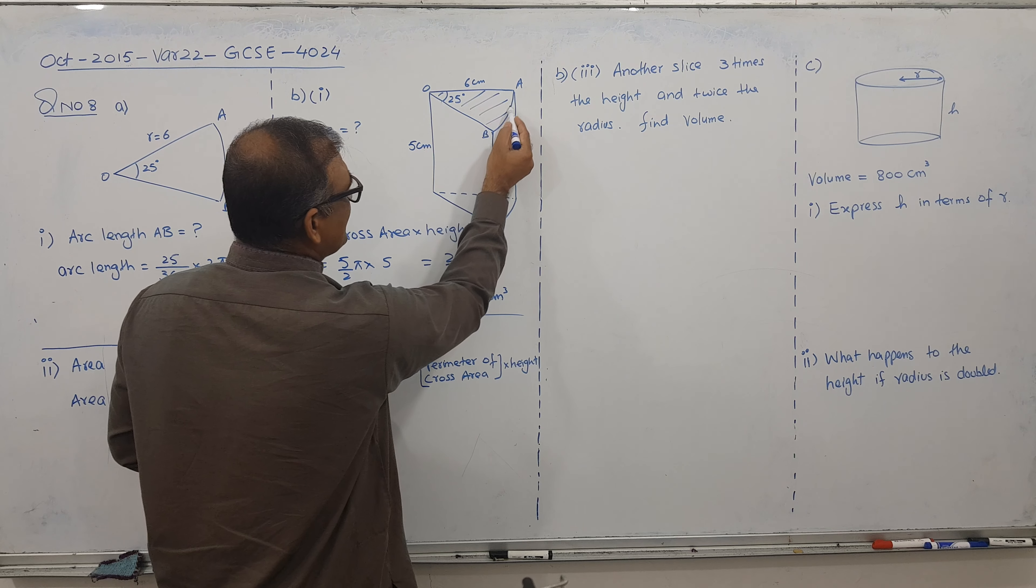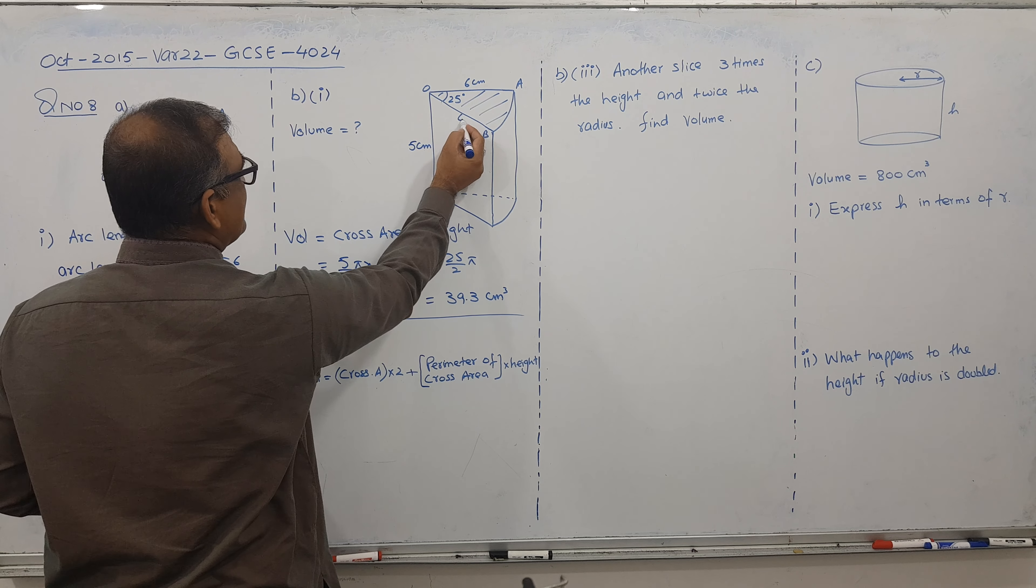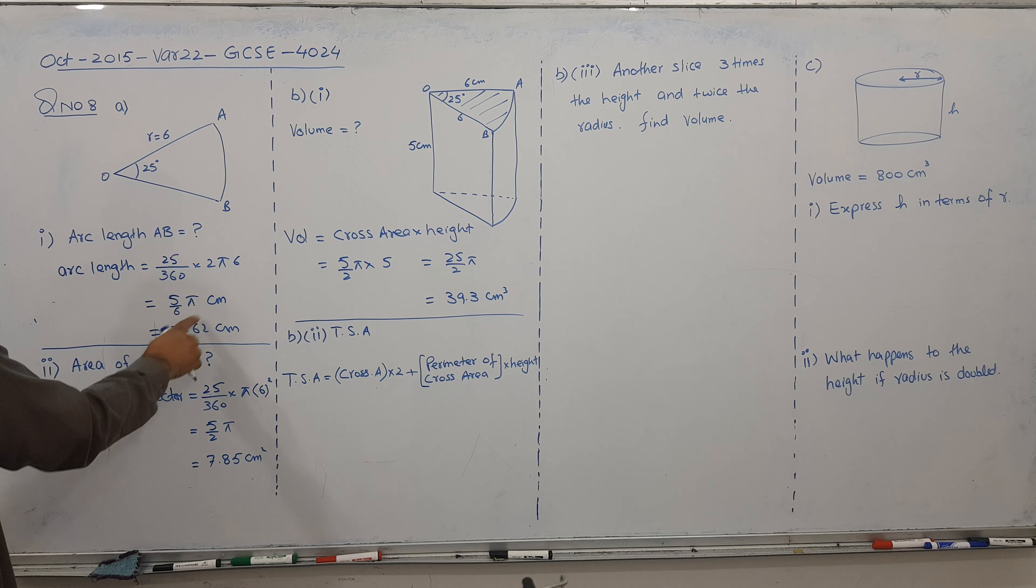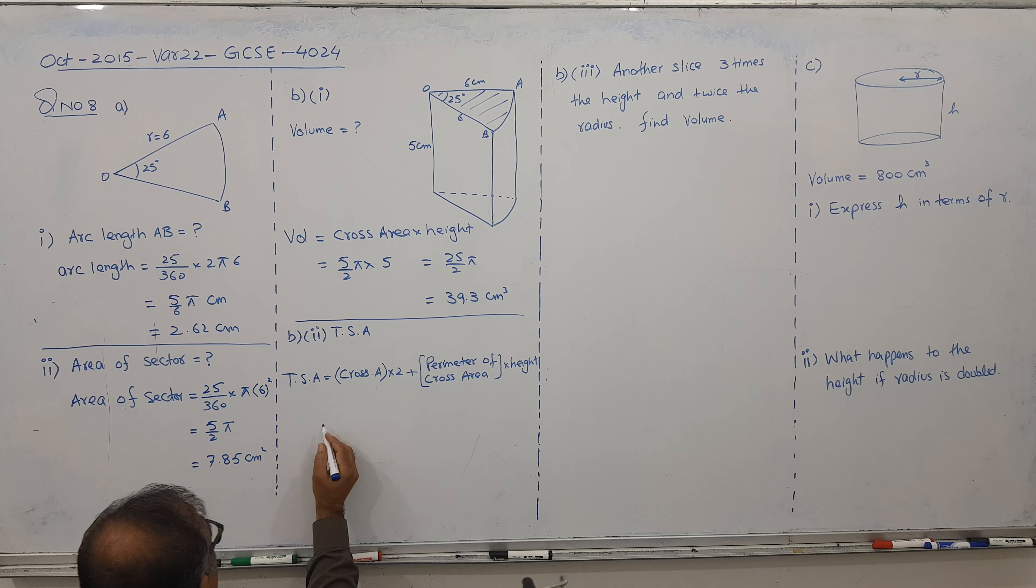Plus this. And plus this. So 6 comes 2 times and arc length. And arc length is here. I will use this one. So cross area we have it. This one cross area.